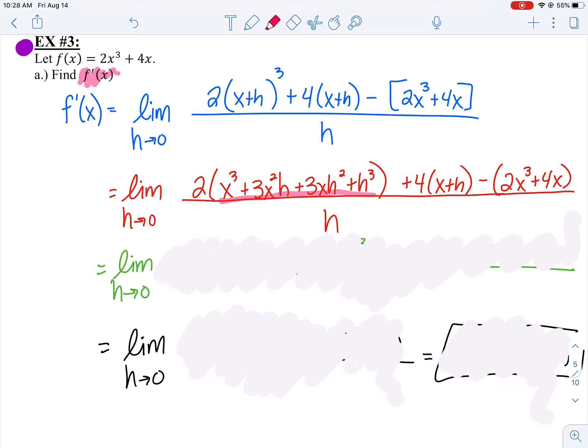Don't forget, there's a 2 in front that we still have to distribute to all these terms. I still have the rest: +4(x+h) minus the f(x) piece.